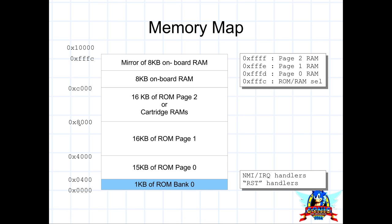Between 4000 and 8000 there is another page of ROM, and between 0 and 4000 yet another page. So we have three selectable pages of ROM — we can pick three 16k slices of the ROM and choose which ones we want. This gives us 48k of ROM that we can see at any one time.